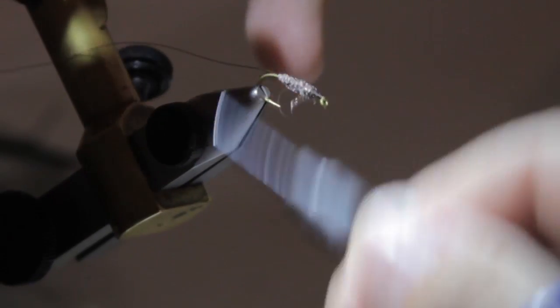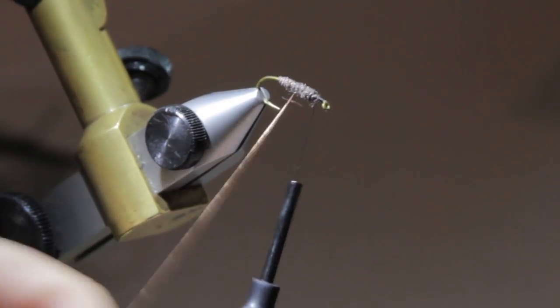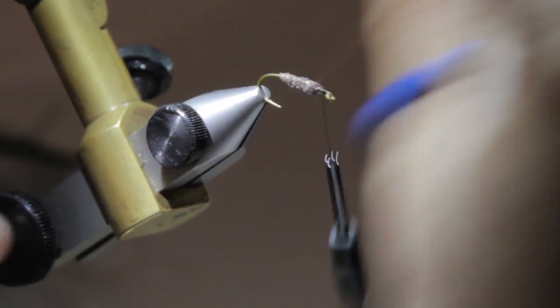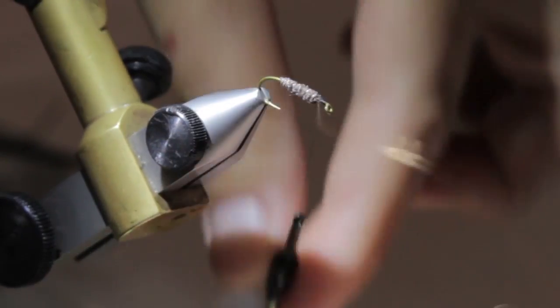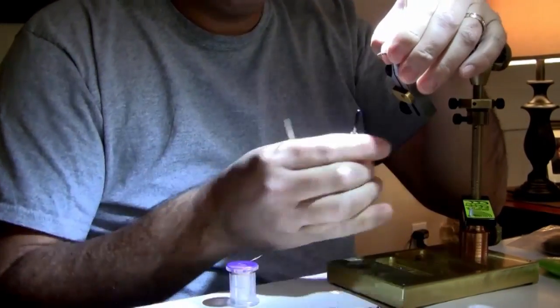Leave a little space for our thorax. Bring our copper wire up through the body. Take that and tug it until it breaks.